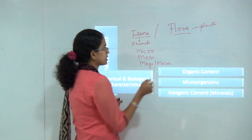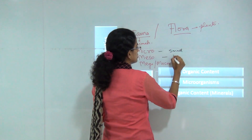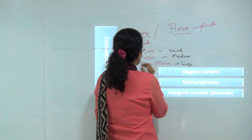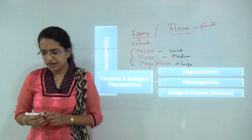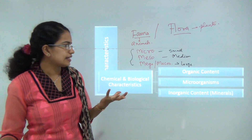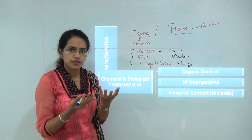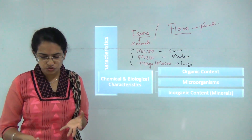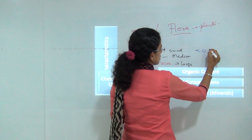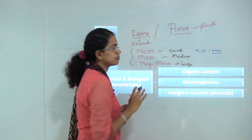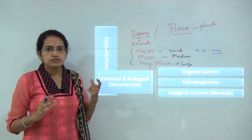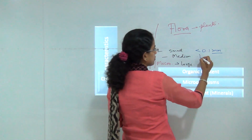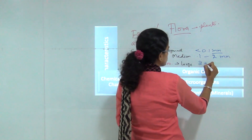As the names suggest: micro means small, meso means medium, and macro means large. Micro fauna includes bacteria and fungus growth found in the soil — very small particles not visible by the naked eye, usually less than 0.1 mm. Meso fauna includes small elements like mites, from the size of 0.1 to 2 mm.